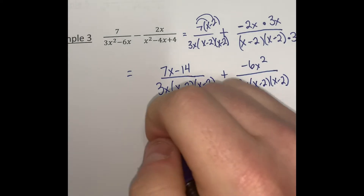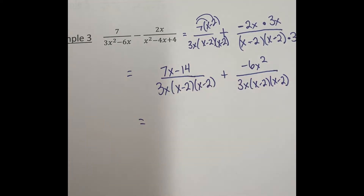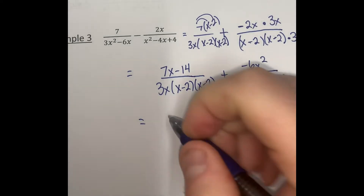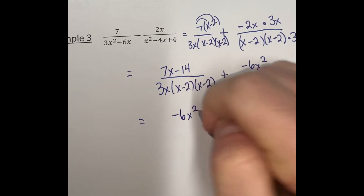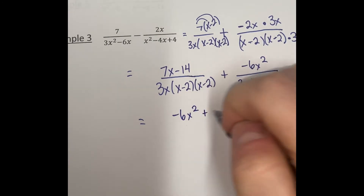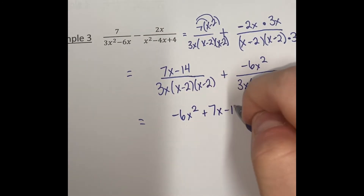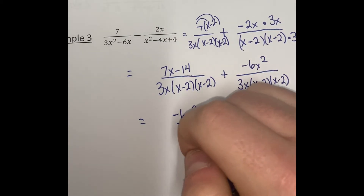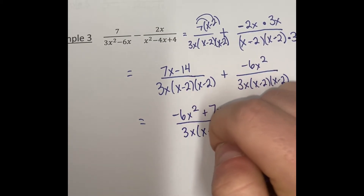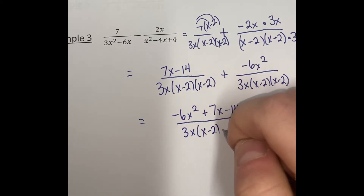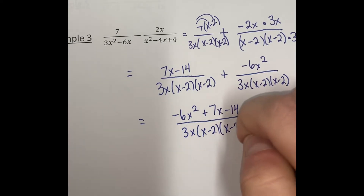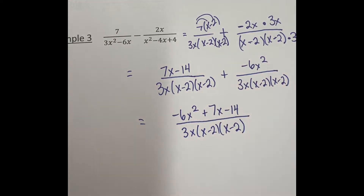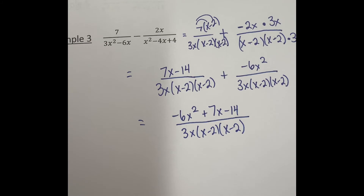Since our denominators are the same now, we can write this as one big expression. We have negative 6x squared plus 7x minus 14. Combining like terms — we don't have any in this case — so we write it over 3x times x minus 2 times x minus 2. We could write that using exponents if we wanted to.